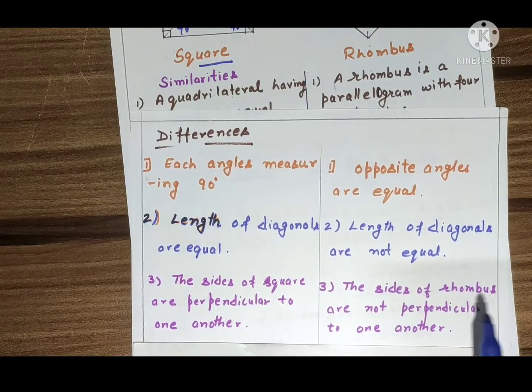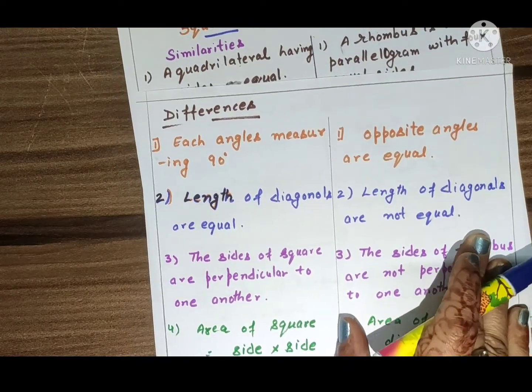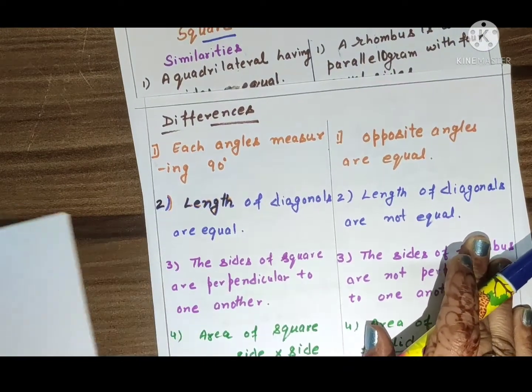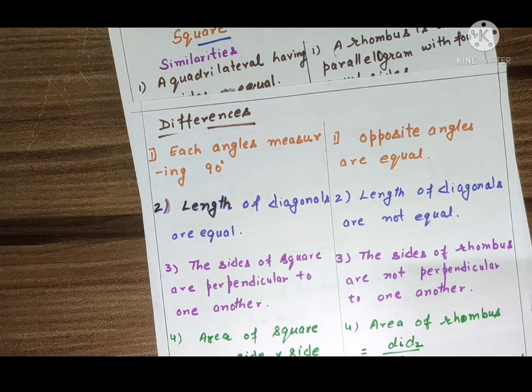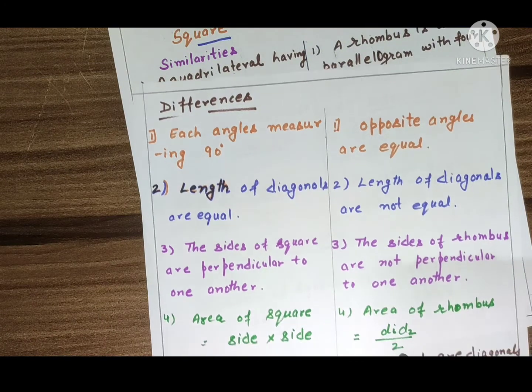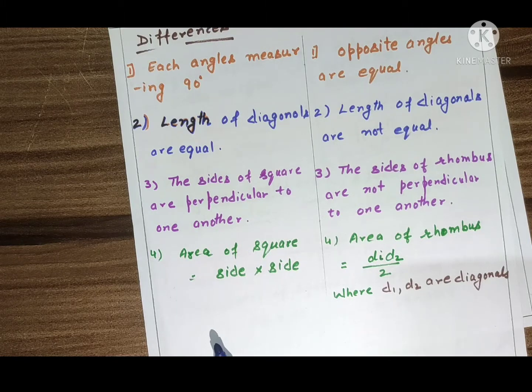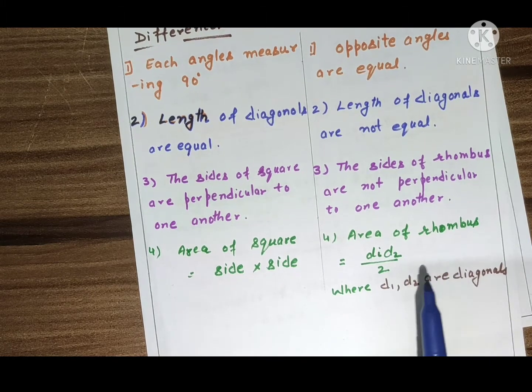Fourth point: the area of square is side multiply side, and area of rhombus is d1 d2 upon 2, where d1 and d2 are diagonals.